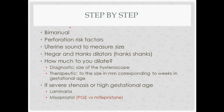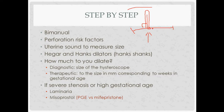Step by step: start with a bimanual exam. The angle between the uterus and the vaginal opening is the version. When doing the bimanual, you're pushing up on the cervix and feeling in the abdomen. If you can feel it bumping against your hand, it's probably anteverted — the normal position. If you can't feel anything, it might be retroverted. You can also assess flexion — whether the uterus bends with respect to the cervix — so you could have anteverted and anteflexed, or retroverted and retroflexed.